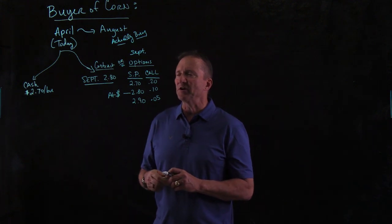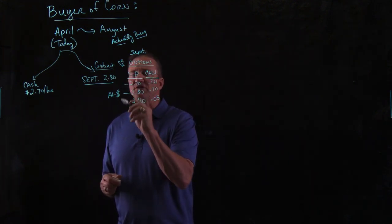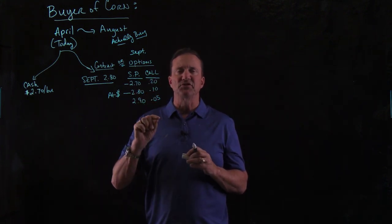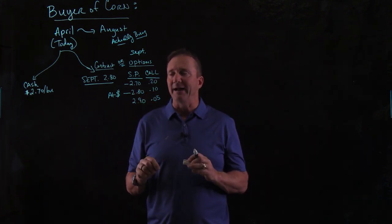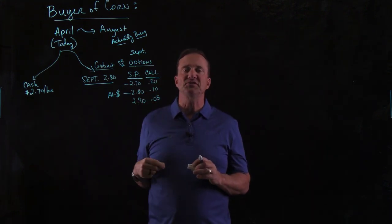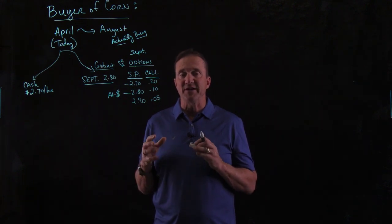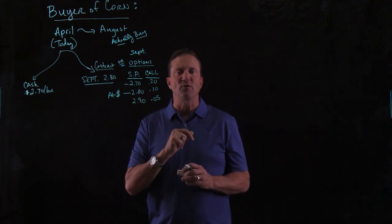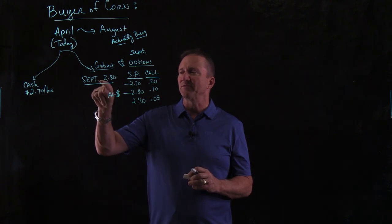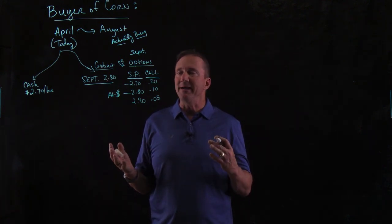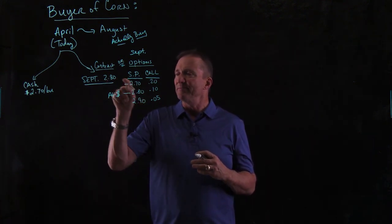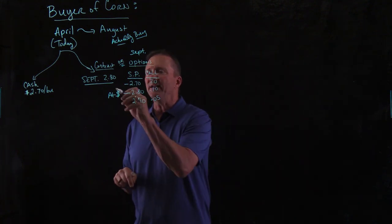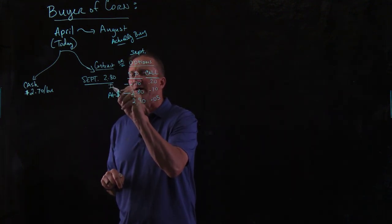Let's look at the other strike prices. There's a strike price at $2.70. Remember, a call option gives you the right to buy, so you could buy this for $2.70. Right now, you have the option to buy it for $2.70. What could you sell it for immediately? You could sell it for $2.80. That automatically would make you $0.10 — $2.80 minus $2.70. So that is called in the money.